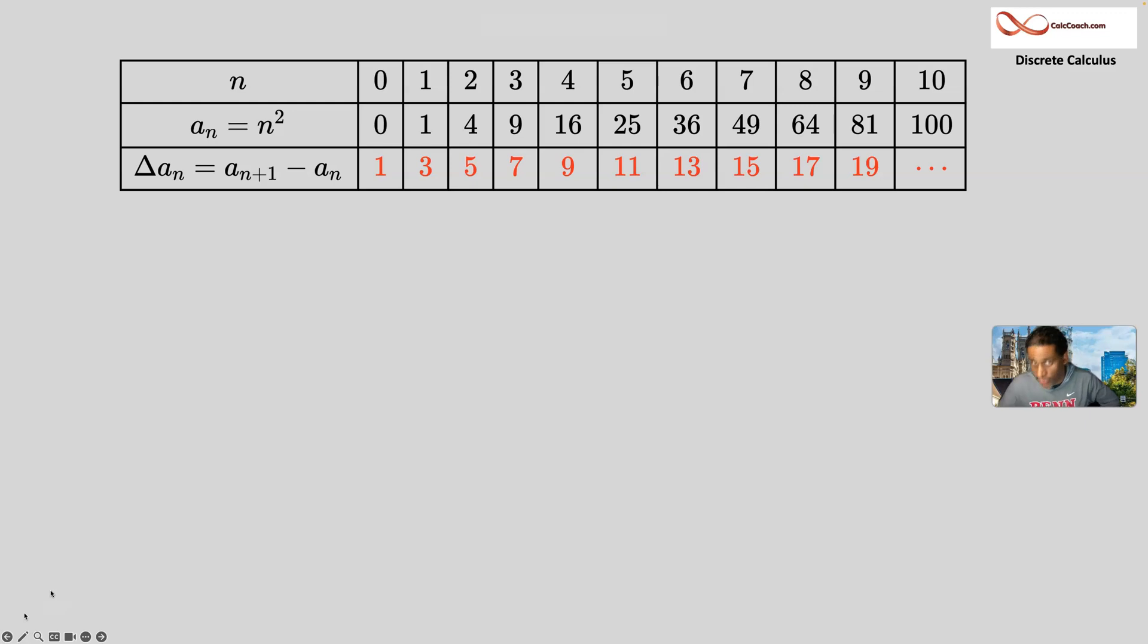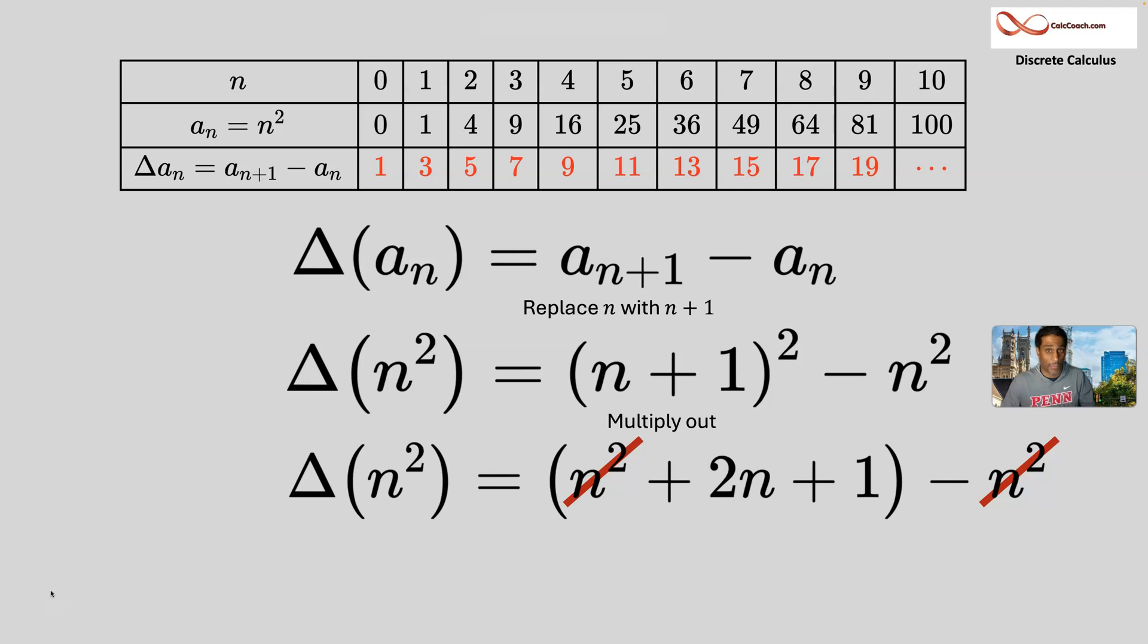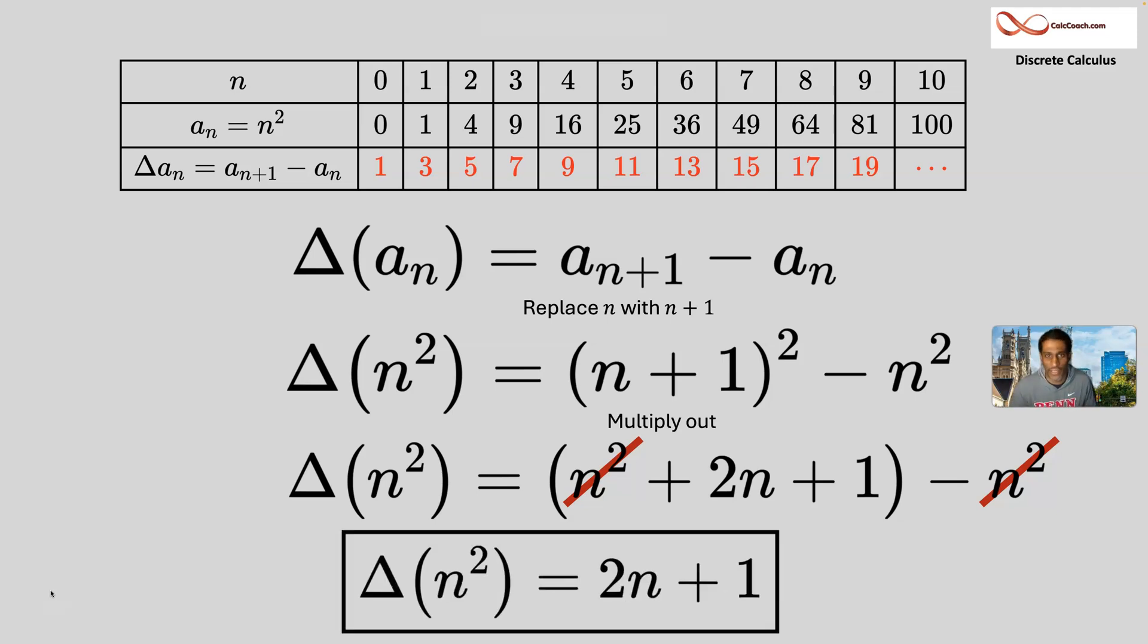So here's n squared as a sequence. If you do the forward difference on n squared, it seems like you end up with all odd numbers. Let's see why. Remember, you're going to replace all your n's by n plus 1's. So instead of n squared, you're going to have n plus 1 quantity squared, and then you're going to subtract n squared. Go ahead and multiply it out. n squared plus 2n plus 1, and then cancel with the n squared. You end up with just 2n plus 1, that formula for an odd number.